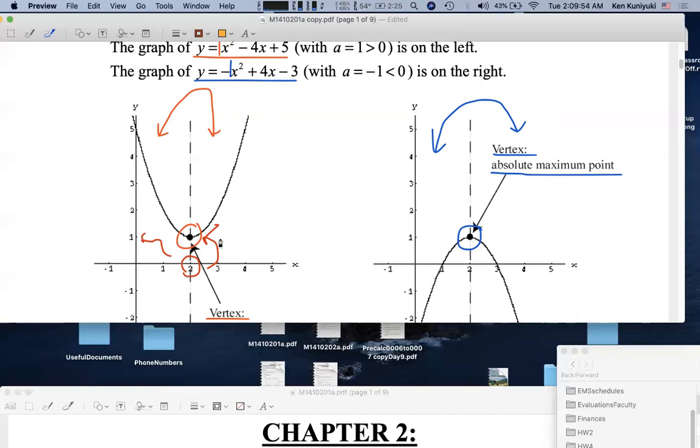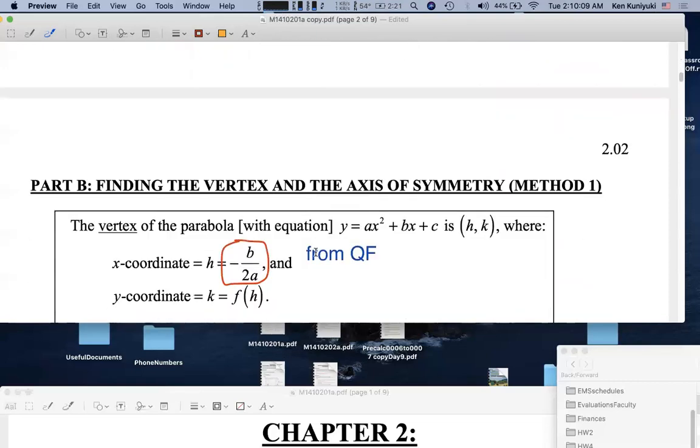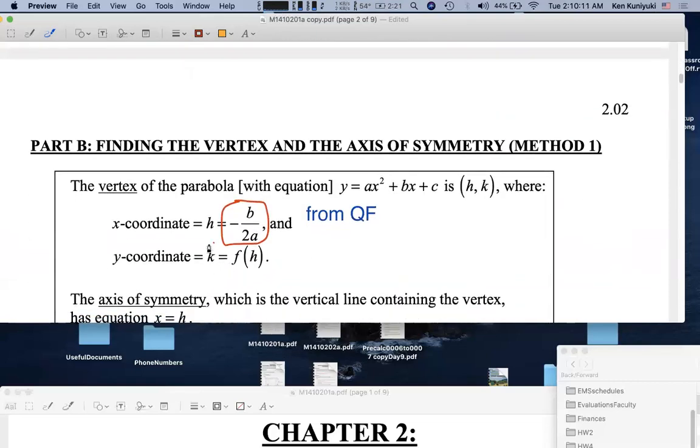Function values are y-coordinates. So here, this is the point h comma k. Here h equals 2. We plug in the x-coordinate, h or 2, to get the y-coordinate, which is k or 1, the function value. Function values are y-coordinates.